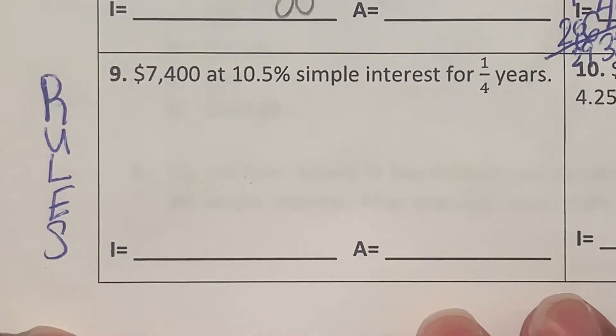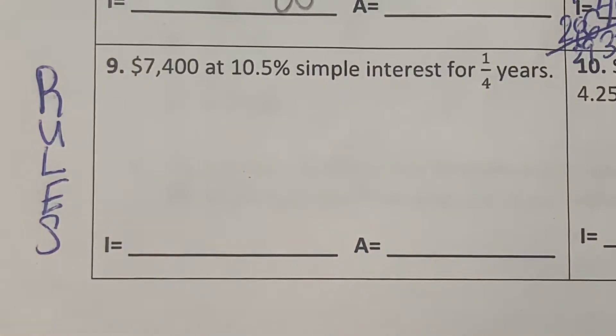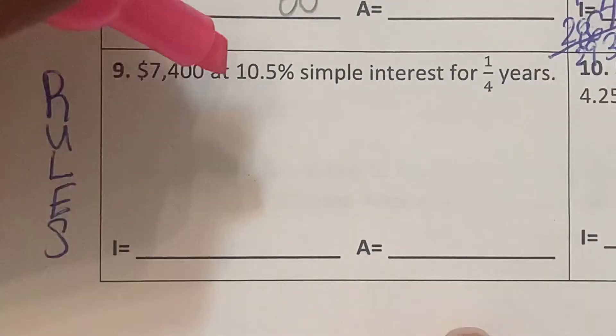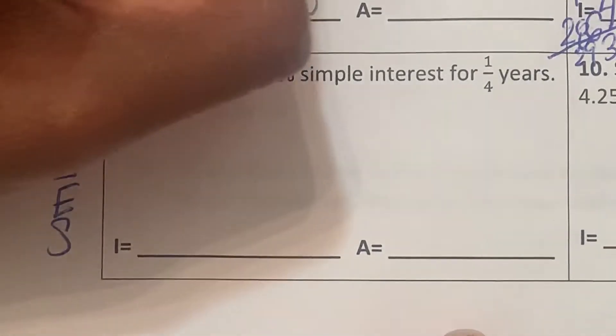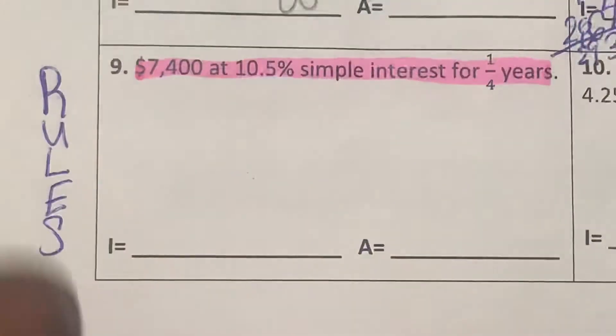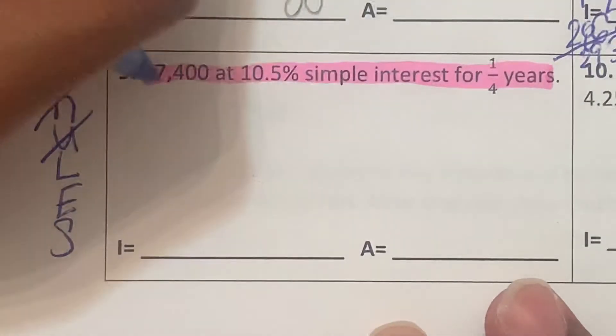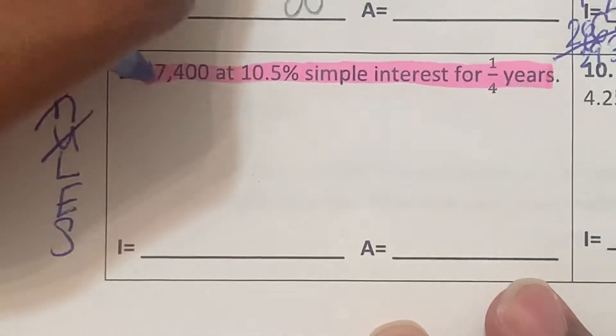So we have $7,400 at 10.5% simple interest for one-fourth of a year. So all of this is basically an important statement, so I'll just underline all of this. I've read it, I've underlined it now or highlighted it.